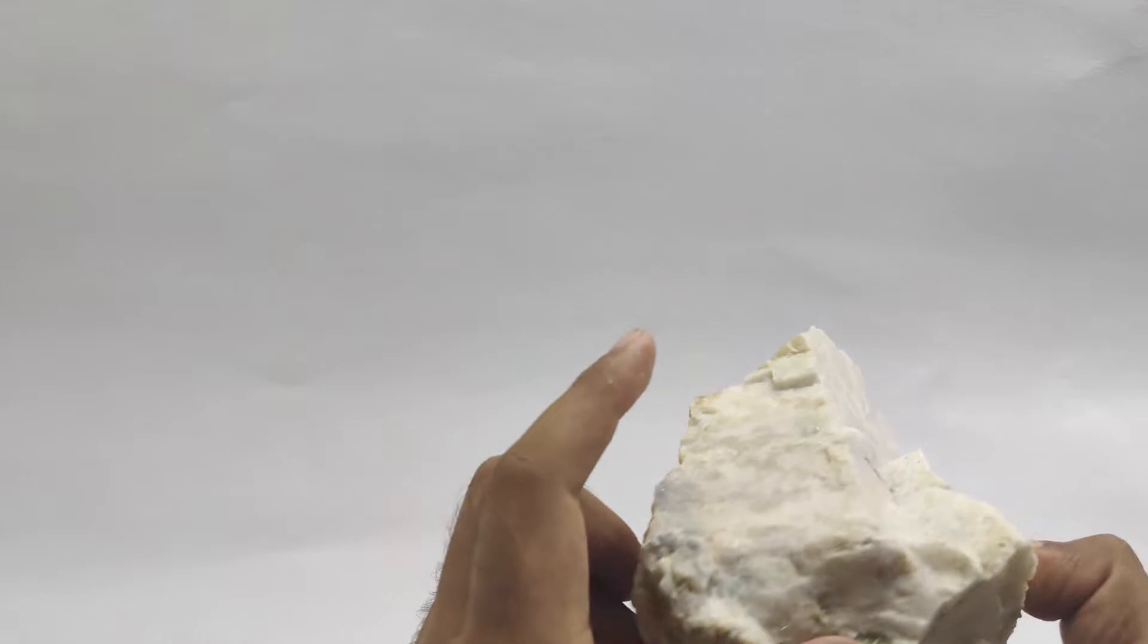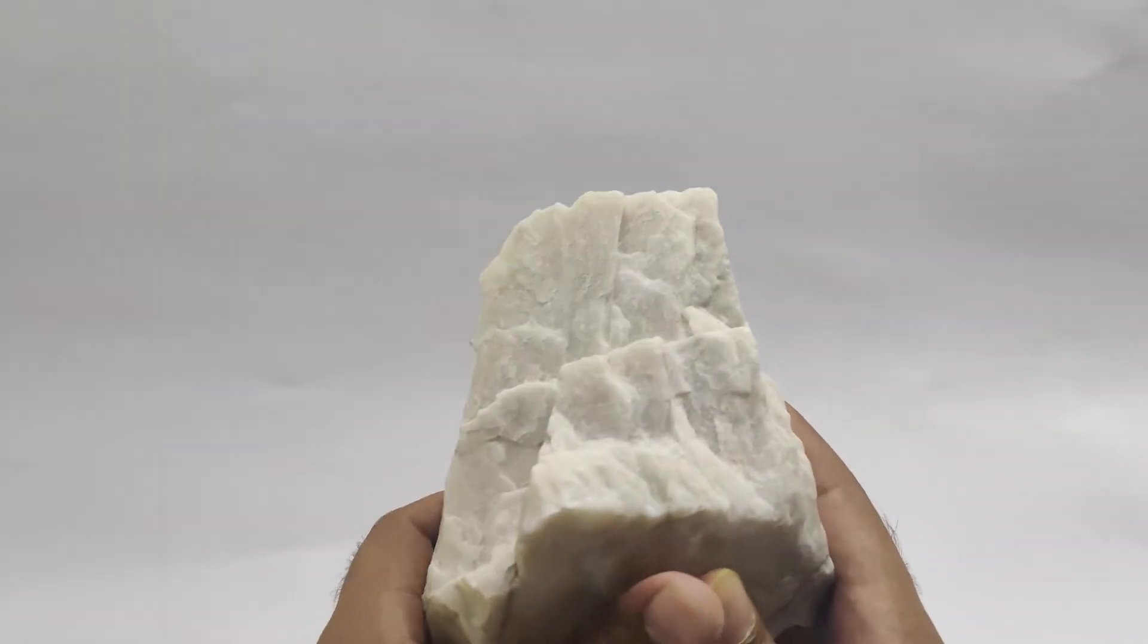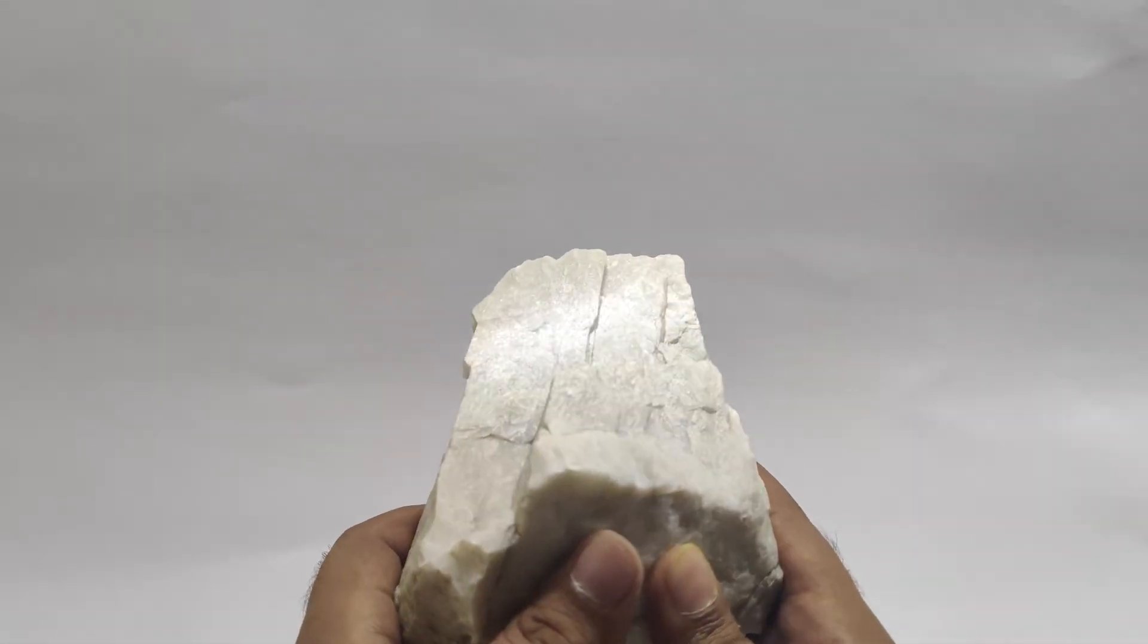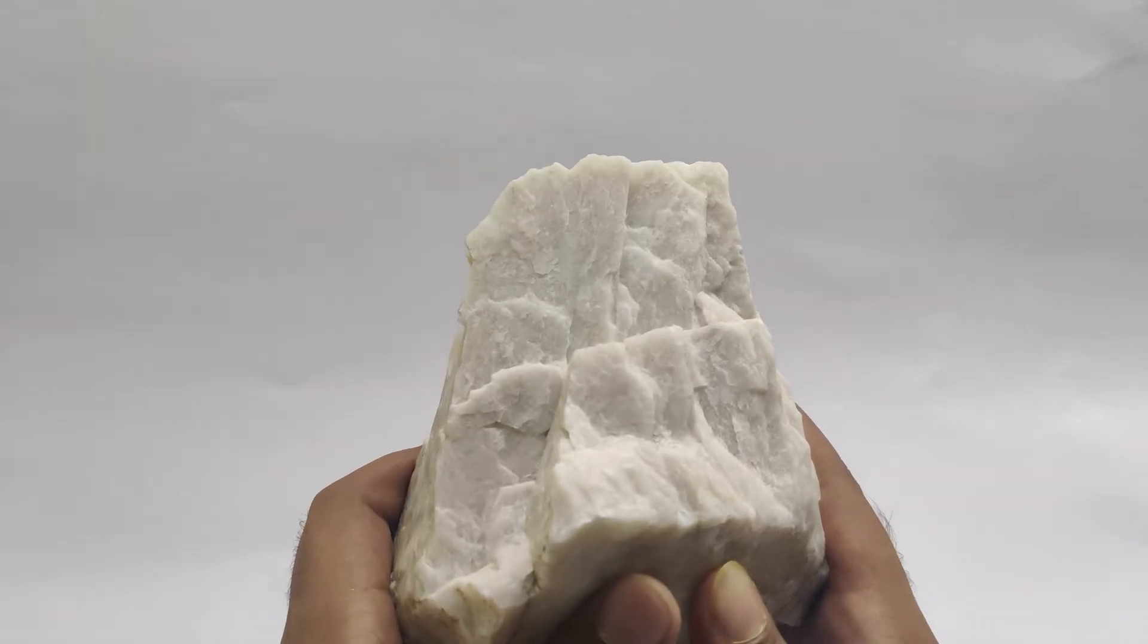The most important property of potash feldspar, however, is its high percentage of potassium oxide, K2O, which gives it its name.